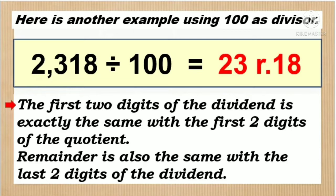Ngayon naman ay gawin natin ng 100 ang ating divisor. 2,318 divided by 100 is equal to 23 remainder 18. Kung napansin nyo, dalawa ang zero ng ating divisor, kaya dalawa rin ang digit ng ating remainder. At ang unang dalawang digit ng ating sagot ay katulad lang din ang dalawang naunang digit ng ating dividend. Ang simple lang, hindi ba?